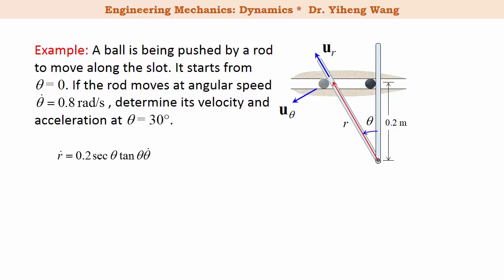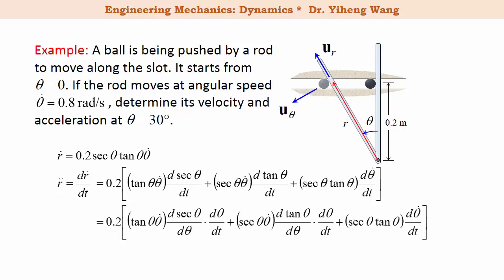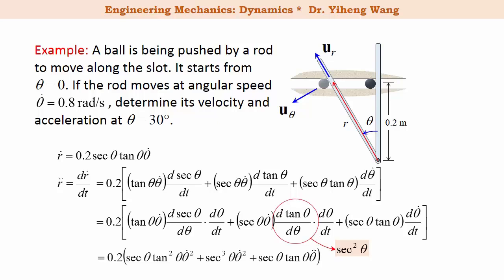We need to continue differentiating with respect to time to get r̈. Since ṙ is the product of sec θ, tan θ, and θ̇, all of which are functions of time, we apply the product rule and the chain rule again. Using d(tan θ)/dθ = sec²θ, we arrive at the expression for r̈. Note that θ̈ in the result is the angular acceleration.